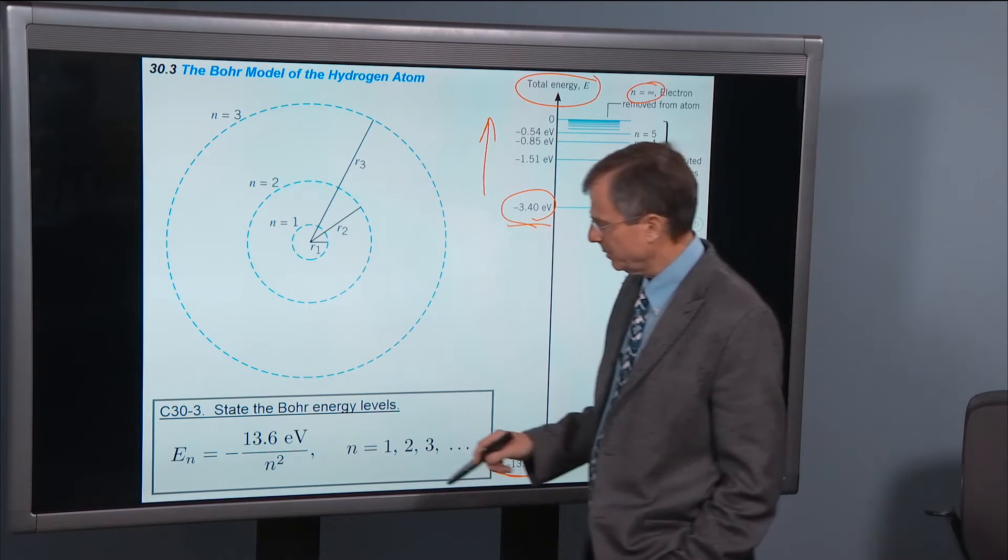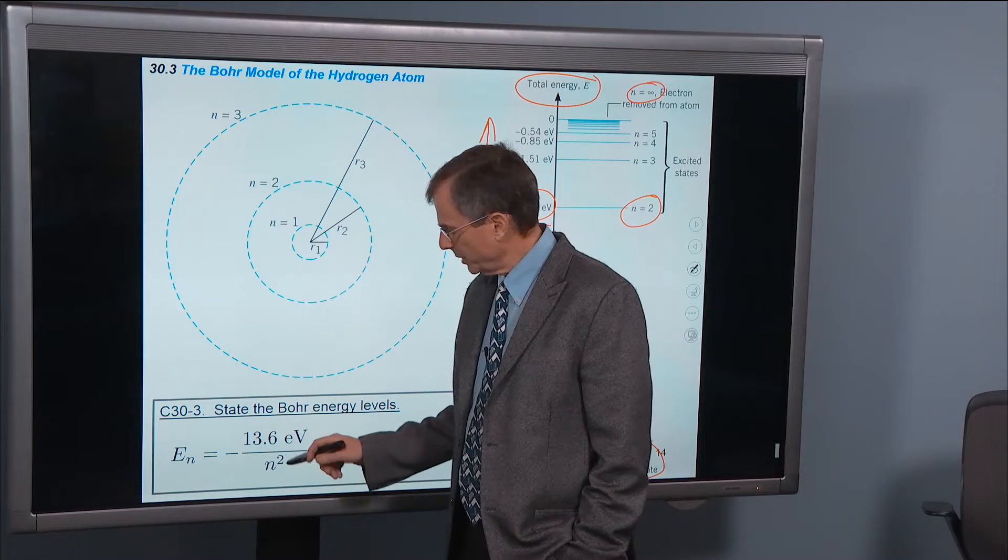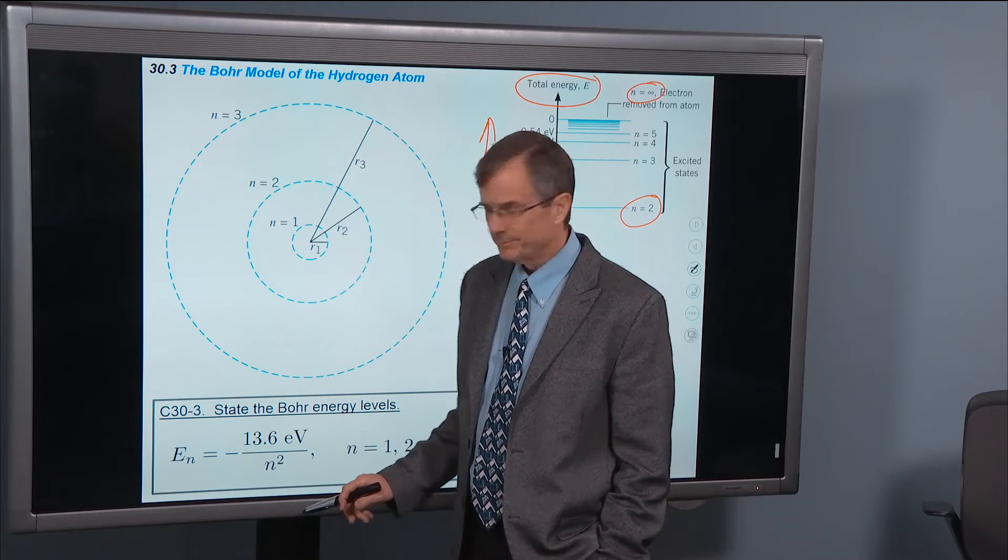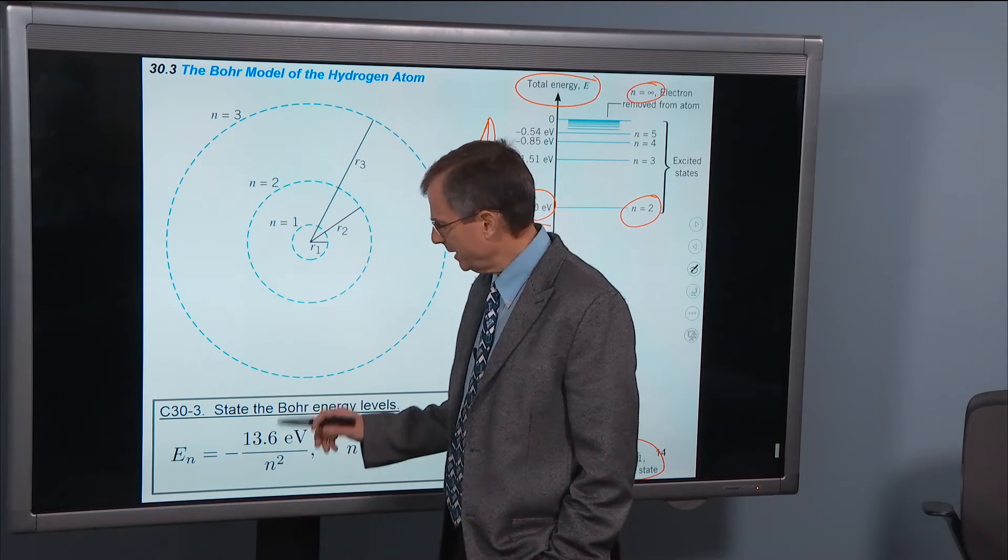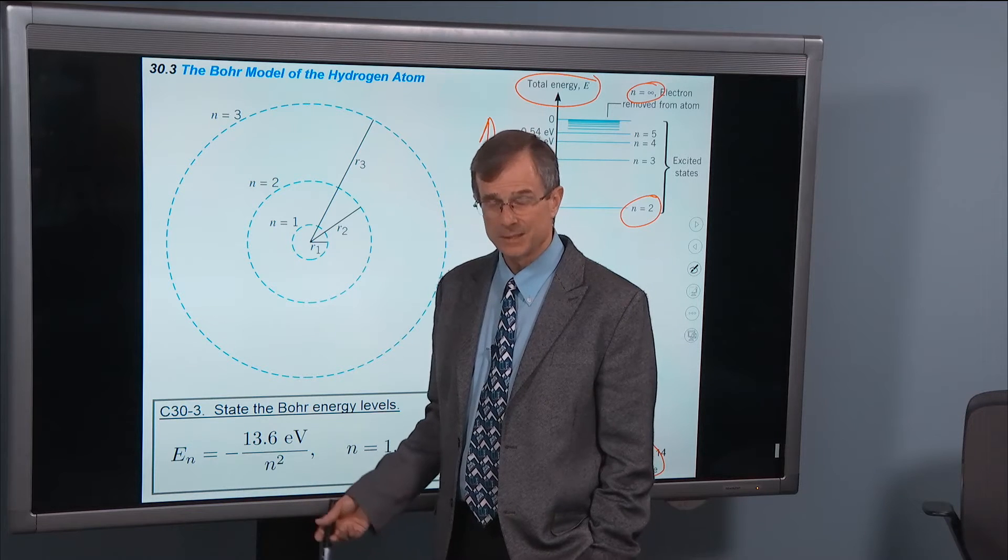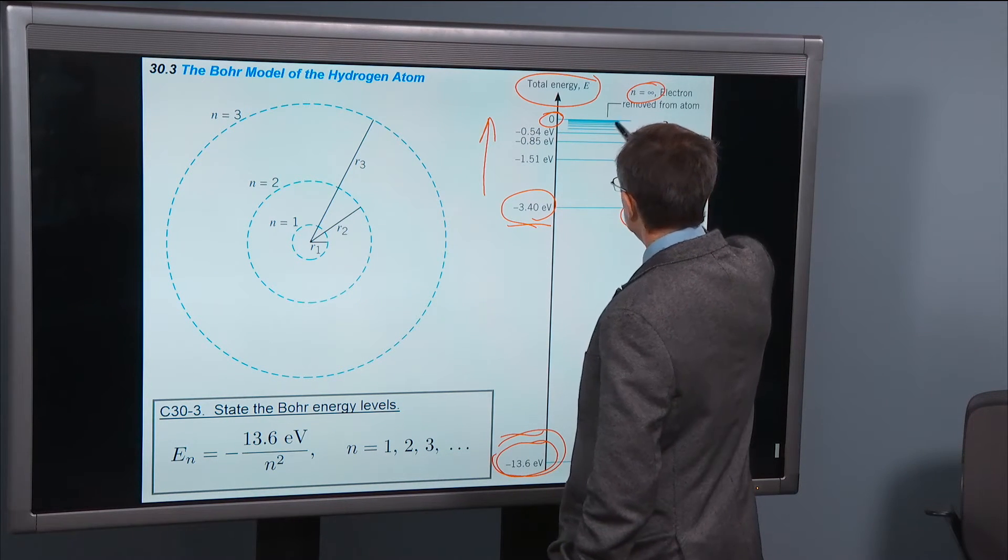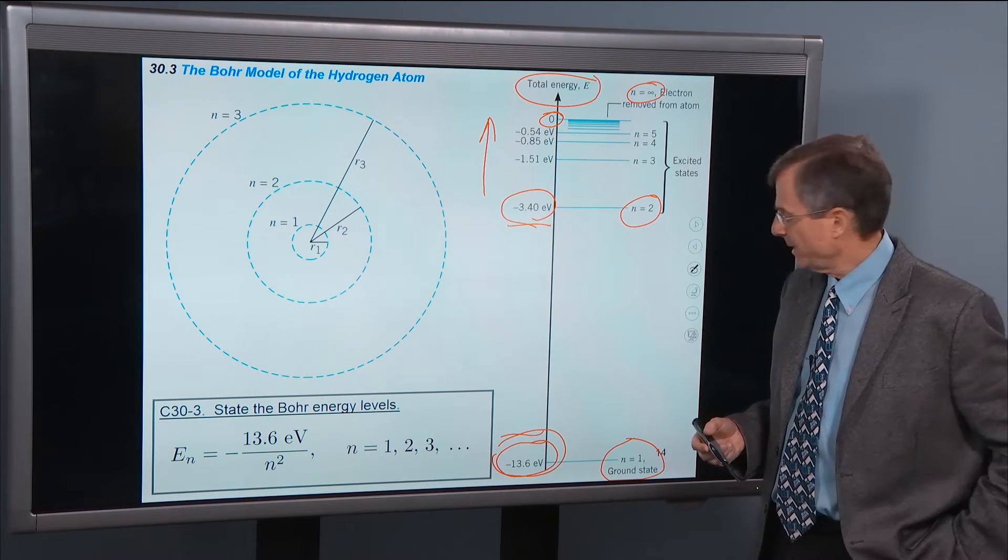What if we plug in n equals infinity into here? Well, if you put infinity in the denominator and you square it, it's going to be even bigger. You're going to have a humongous denominator. And anything divided by a humongous denominator is 0. So you end up with 0 energy corresponding to n equals infinity.